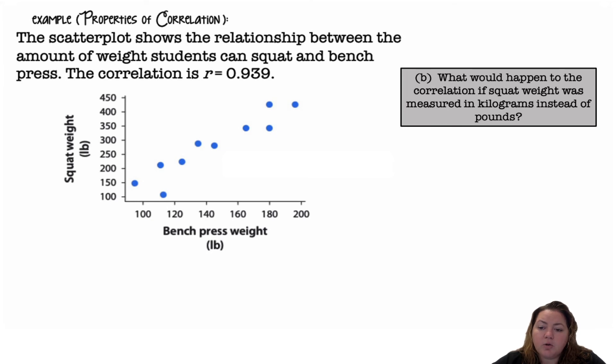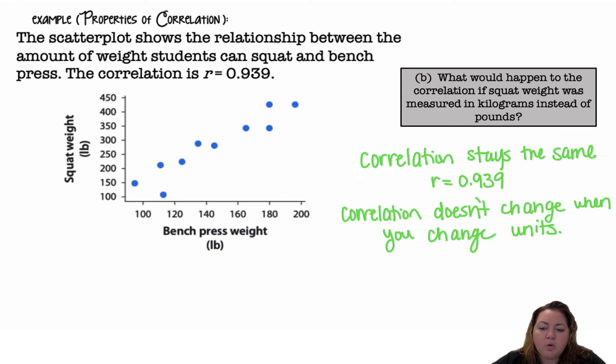What would happen to the correlation if squat weight was measured in kilograms instead of pounds? The correlation would stay the same, 0.939. Correlation doesn't change when we change the units. Correlation is not tied to the units at all. It's just the measure of the strength of the relationship between the two variables.